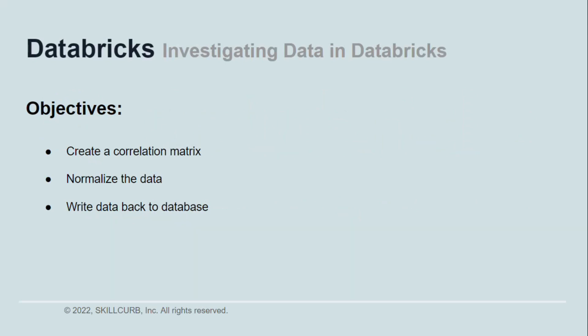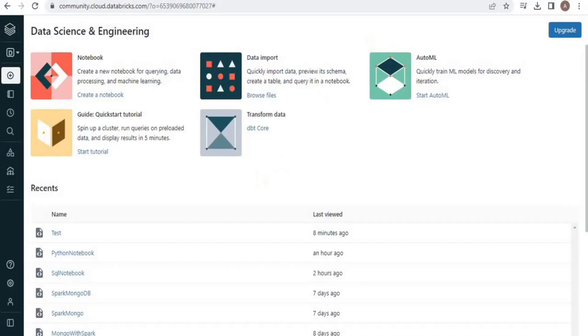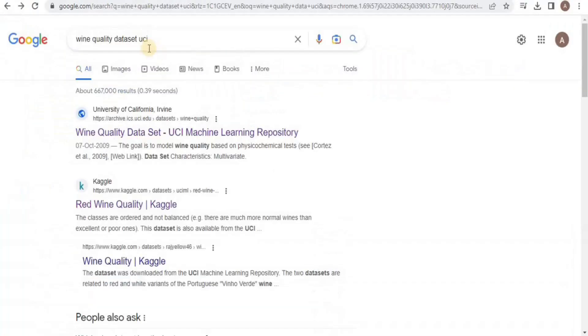By the end of the lesson you will have learned how to create a correlation matrix to see how different columns correlate with each other. You will also learn how to normalize the data and prepare it for machine learning, and then at the end you will write the data you created back to the database.